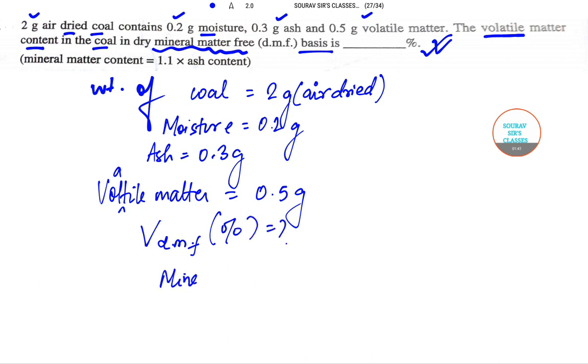The mineral matter content, let us calculate this first, is equal to 1.1 into ash content. So we have 1.1 into 0.3, this becomes equal to 0.33 grams.